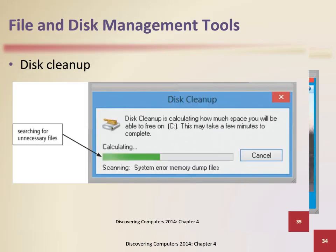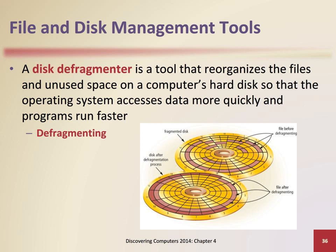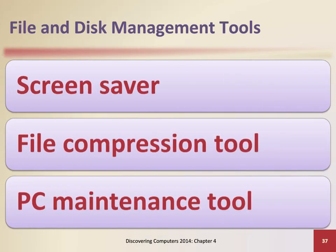A disk cleanup tool searches for and removes unnecessary files. A disk defragmenter reorganizes files and used space on the hard disk so programs run faster. A screen saver causes a display device's screen to show a moving image or blank screen if no keyboard or mouse activity occurs for a specified time. A file compression tool shrinks the size of a file. A PC maintenance tool identifies and fixes operating system problems, detects and repairs disk problems, and includes the capability of improving a computer's performance.